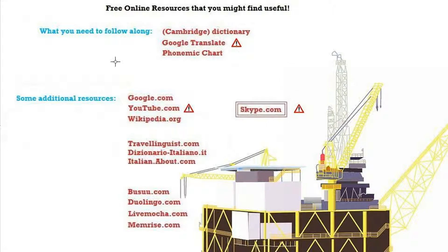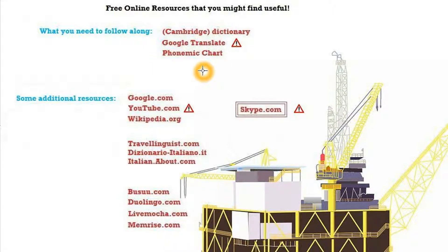The things I think you need are a dictionary, Google Translate, and a phonemic chart. Just Google 'phonemic chart' and the first result is the one you want — it's just amazing. It's a collection of all the English sounds, and if you know the sounds and the symbols for each sound before starting the course, you're going to have a huge advantage and learn pronunciation a lot quicker.